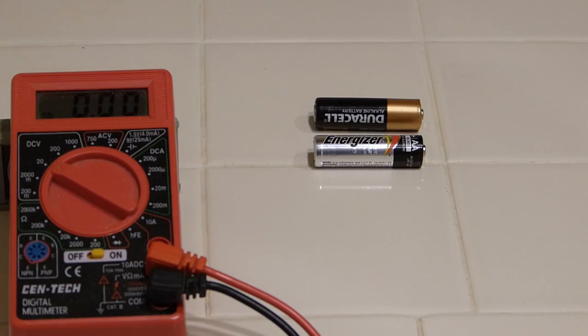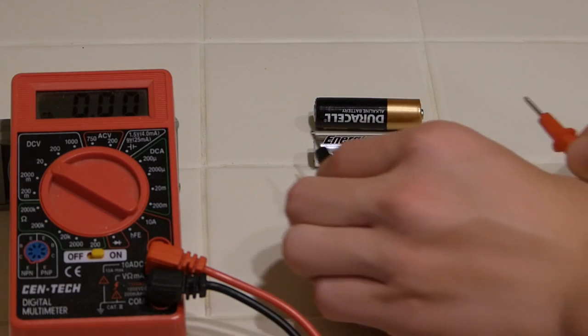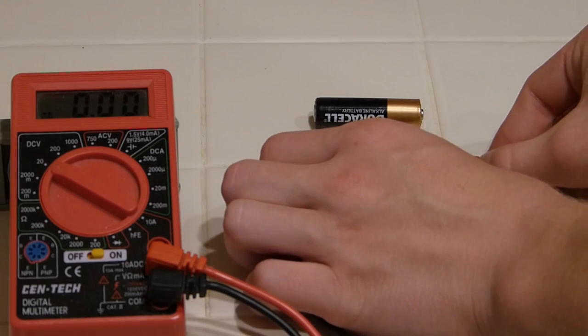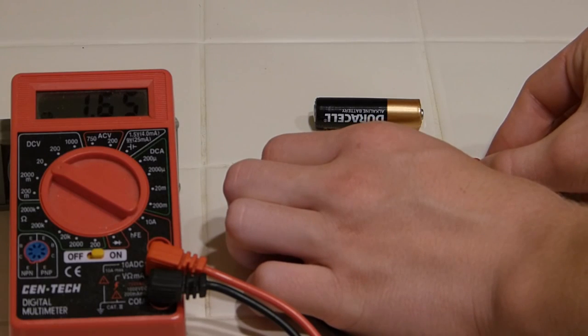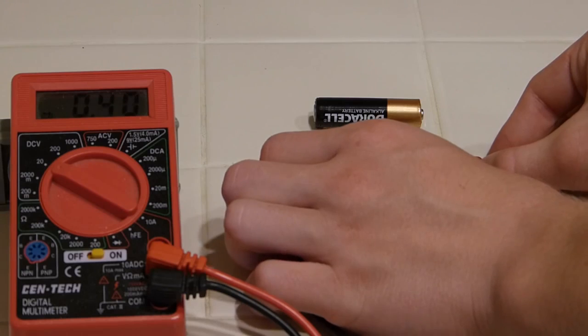Here are two batteries. The Energizer is good. Alkaline batteries are rated for 1.5 volts. This one is brand new. It's showing 1.65, that's excellent.